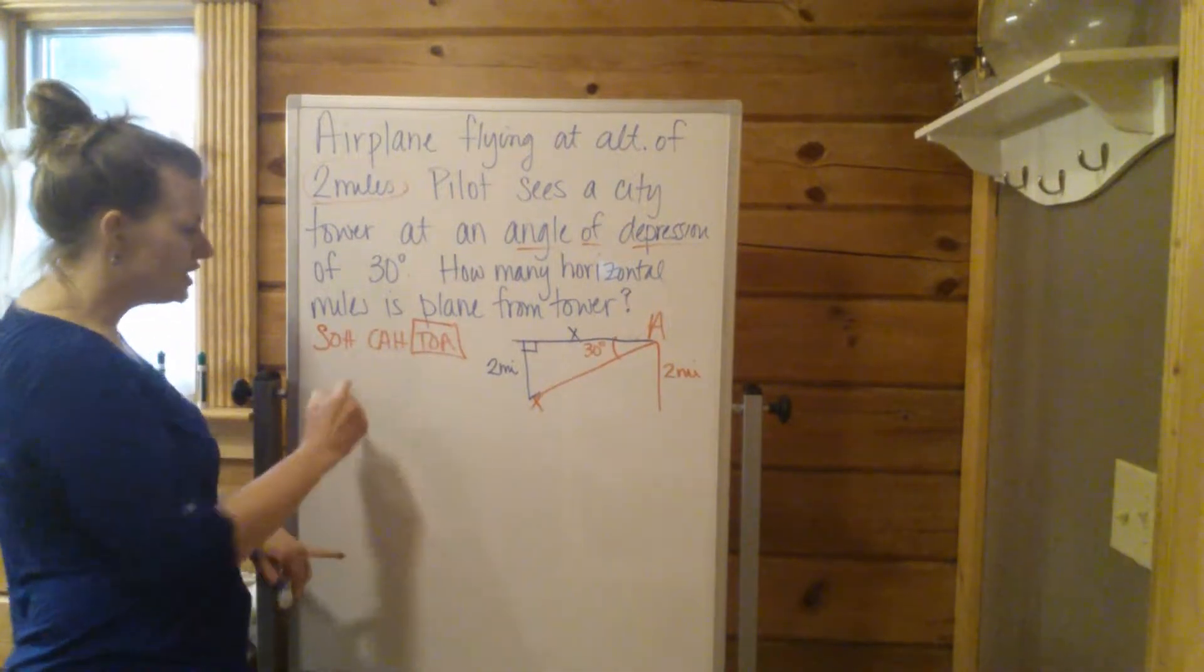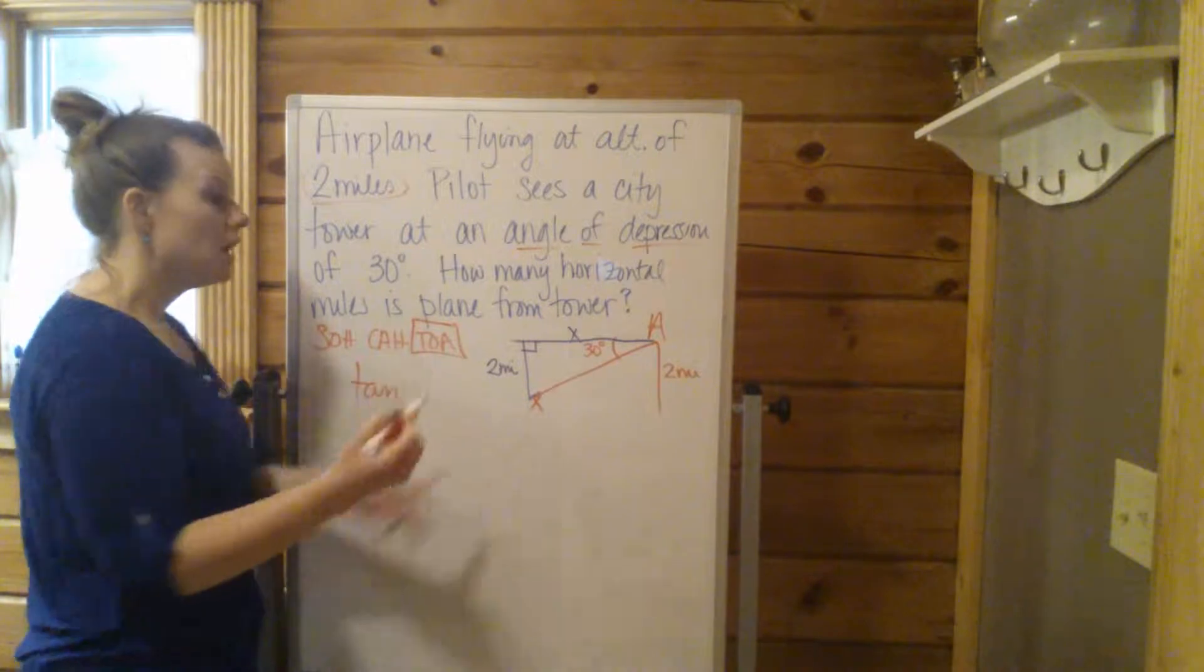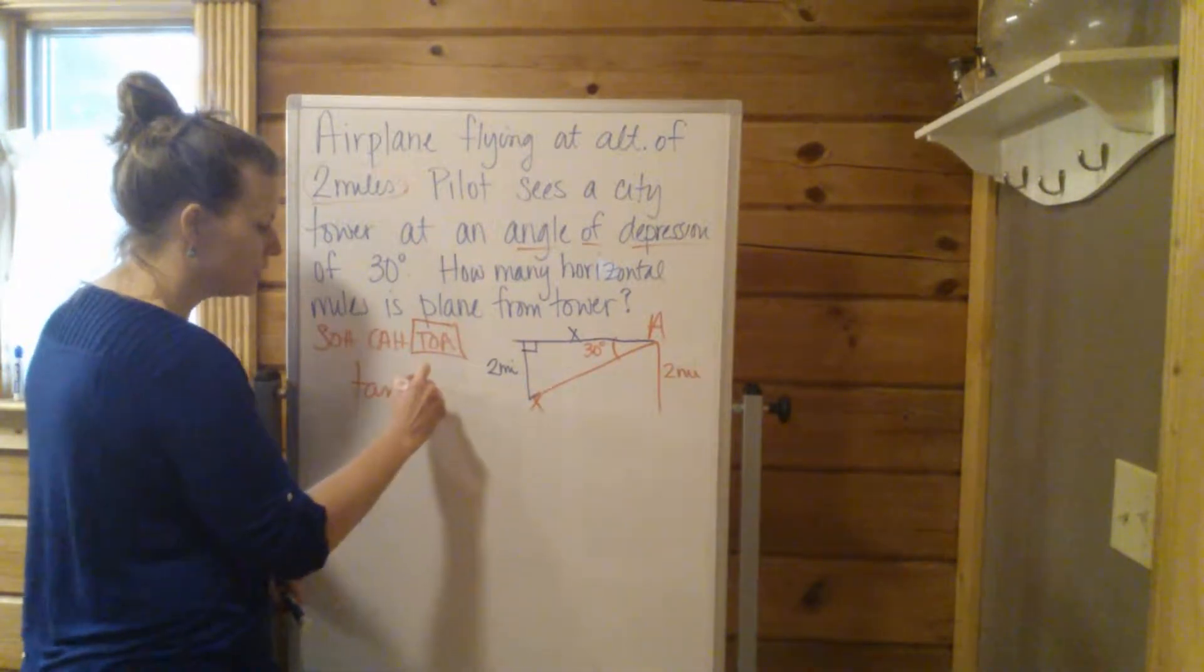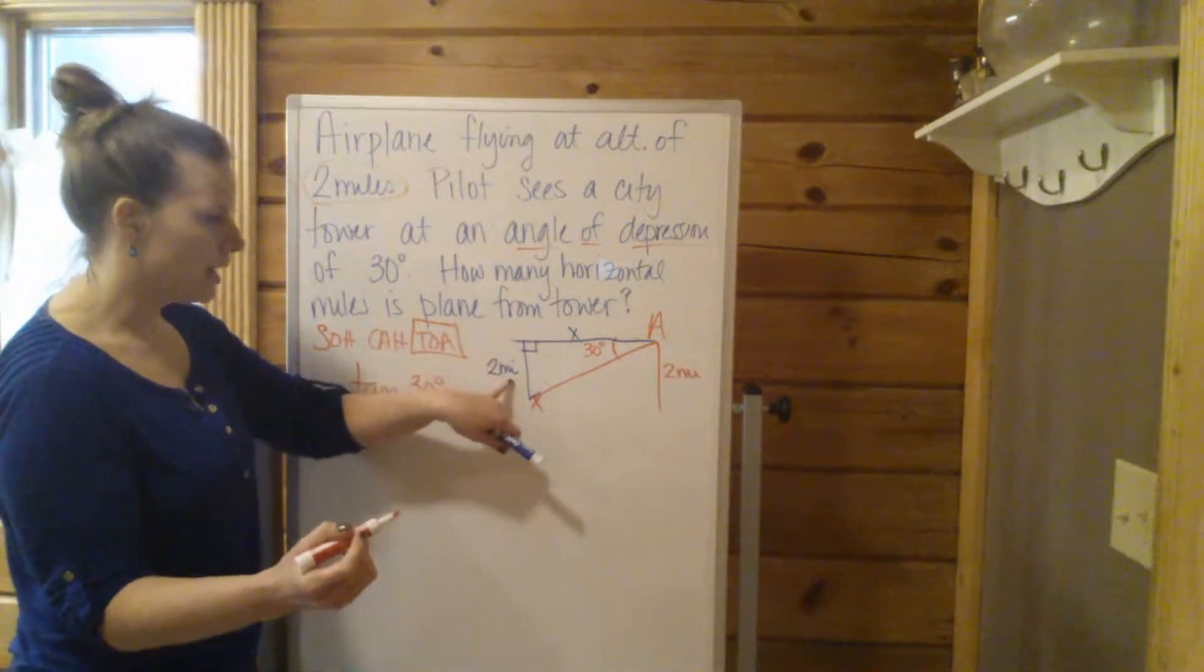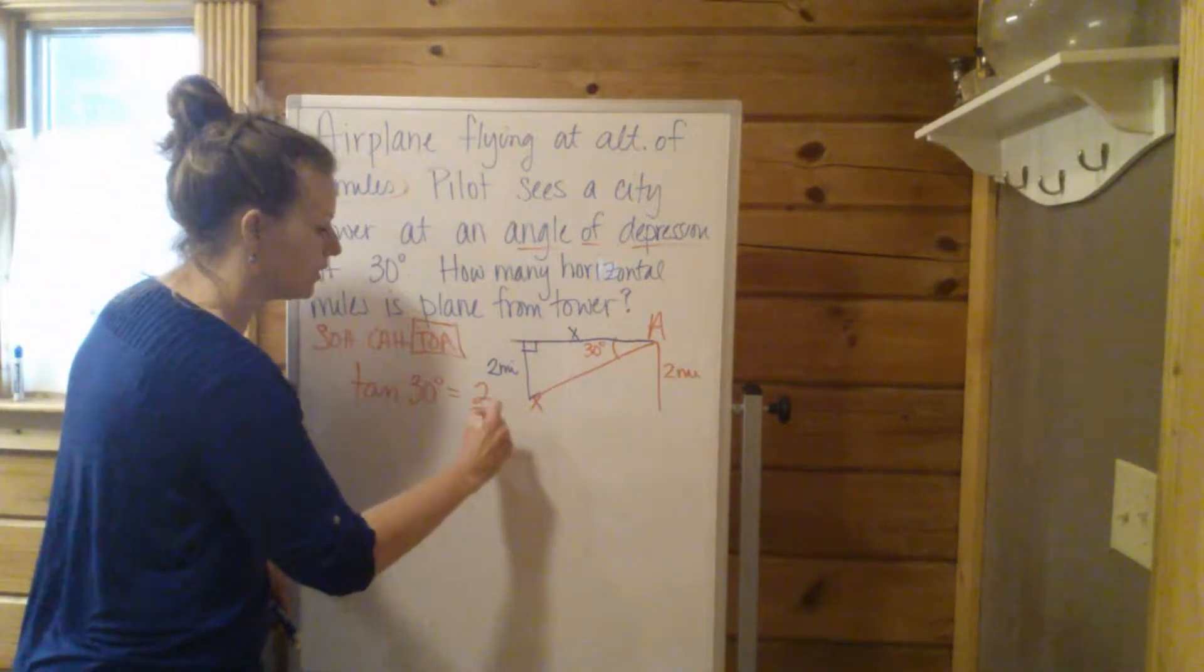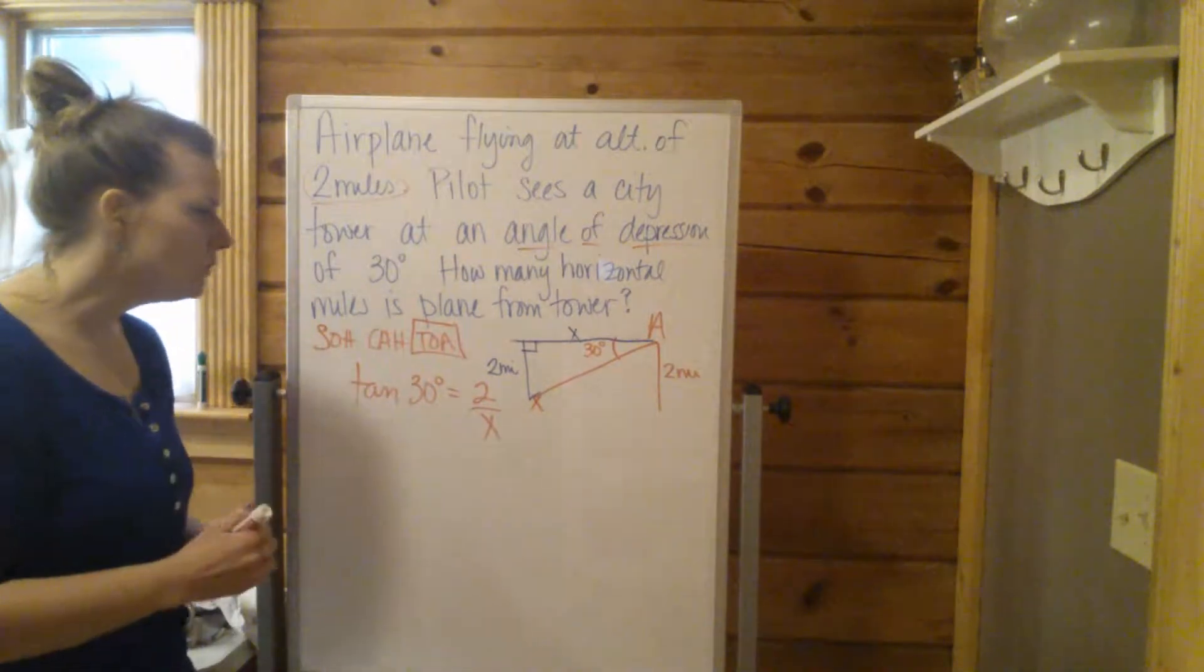So we use tangent of my angle, which is 30 degrees, and that's going to equal O over A, opposite over adjacent, 2 over X.